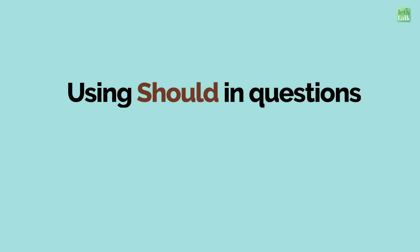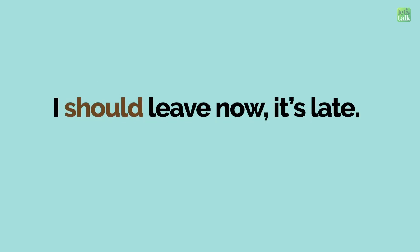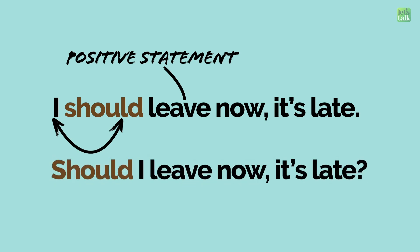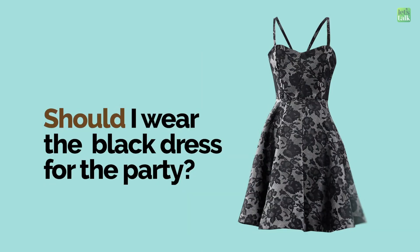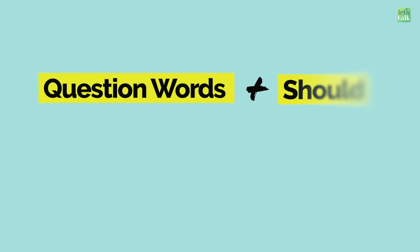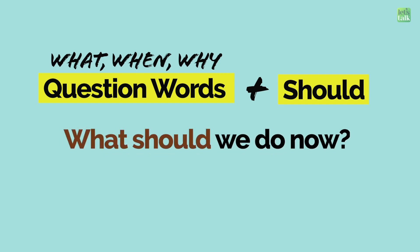Let's look at how to use Should in questions. We use Should in questions to seek someone's advice, recommendation or suggestion. Take a look at this sentence: 'I should leave now — it's late.' To change it into a question, just change the order of the modal verb Should with the subject: 'Should I leave now? It's late.' 'Should I wear the black dress for the party?' — here I am asking for your advice. You can also use question words such as what, when, why before the modal verb: 'What should we do now?' 'Why should he lie to me?'